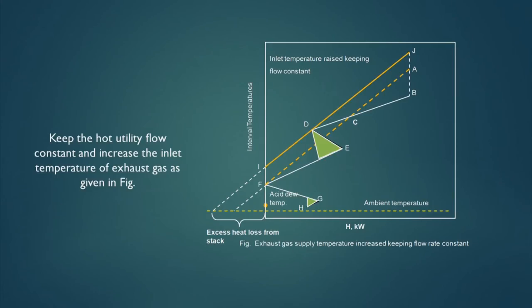The third method is to keep the hot utility flow constant and increase the inlet temperature of the exhaust gas — shifting the entry point of the exhaust gas from A to J. By doing so, the hot utility line is now able to service all parts of the GCC, whereas at the original position it was not able to serve the D-to-C part of the GCC curve. We have to examine whether we can increase the exhaust temperature of the GT by that much, as it will affect the GT performance.